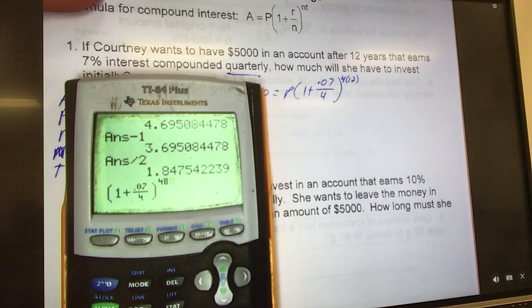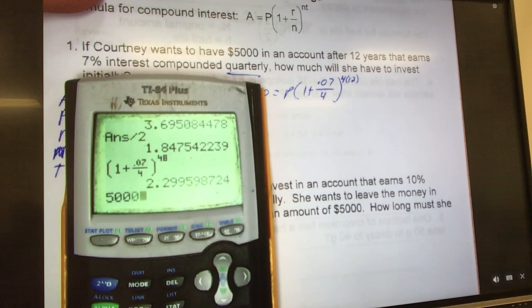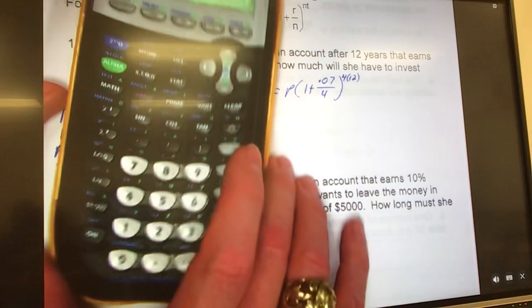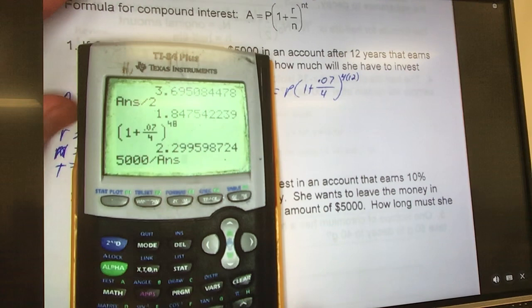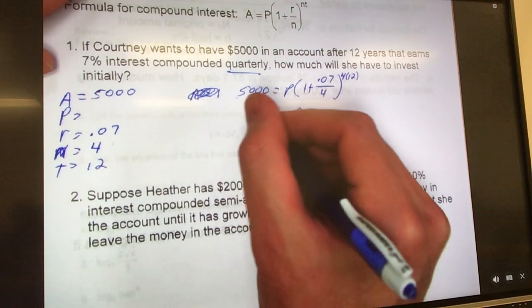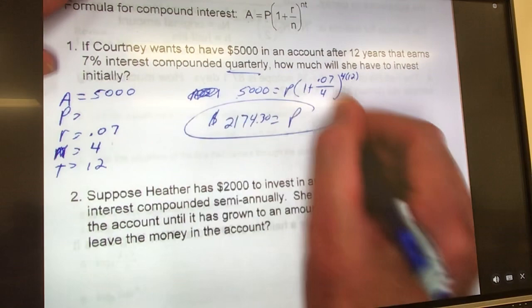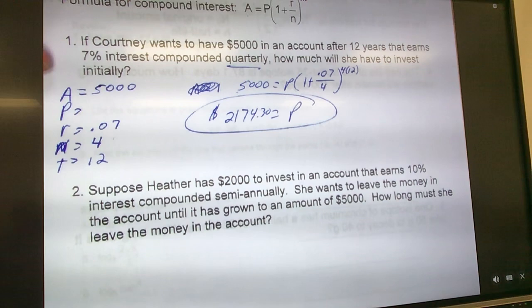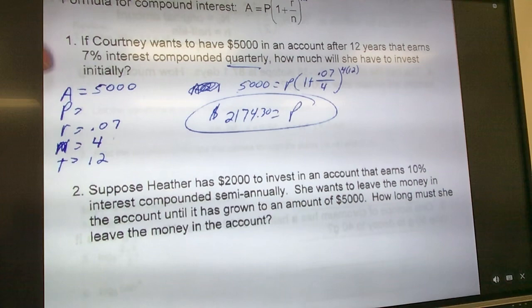We take our handy-dandy calculator, parenthesis, 1 plus 0.07 over 4, close them, raised to the 4 times 12 is 48, right? Okay, and it gives me that. So I'm going to take $5,000 divided by answer, so second minus sign gives me an answer. Hit enter, and it tells me 2174.29, so we're talking money here. So when I divided all that out, my P equaled $2,174.30. That would be how much my initial amount to invest would be to have $5,000 after 12 years at 7% compounded quarterly. Oh, 29 cents, not 30, my bad.